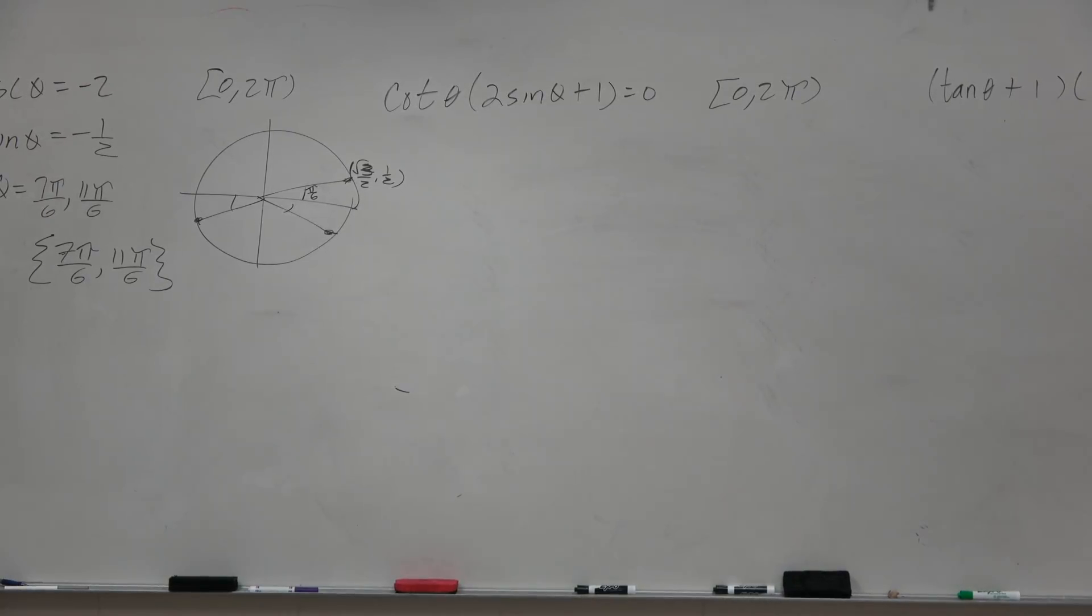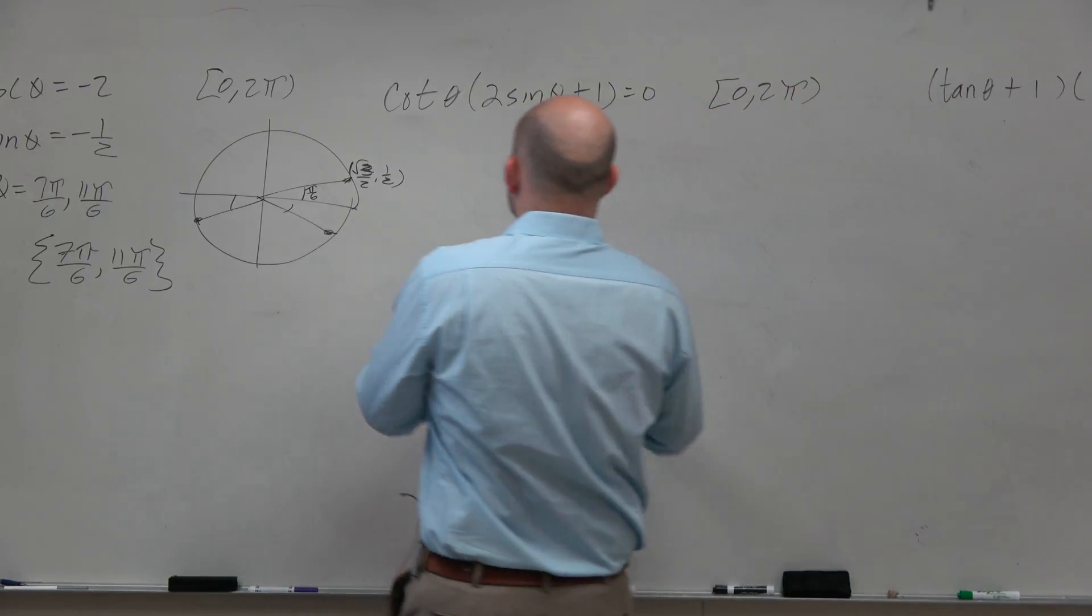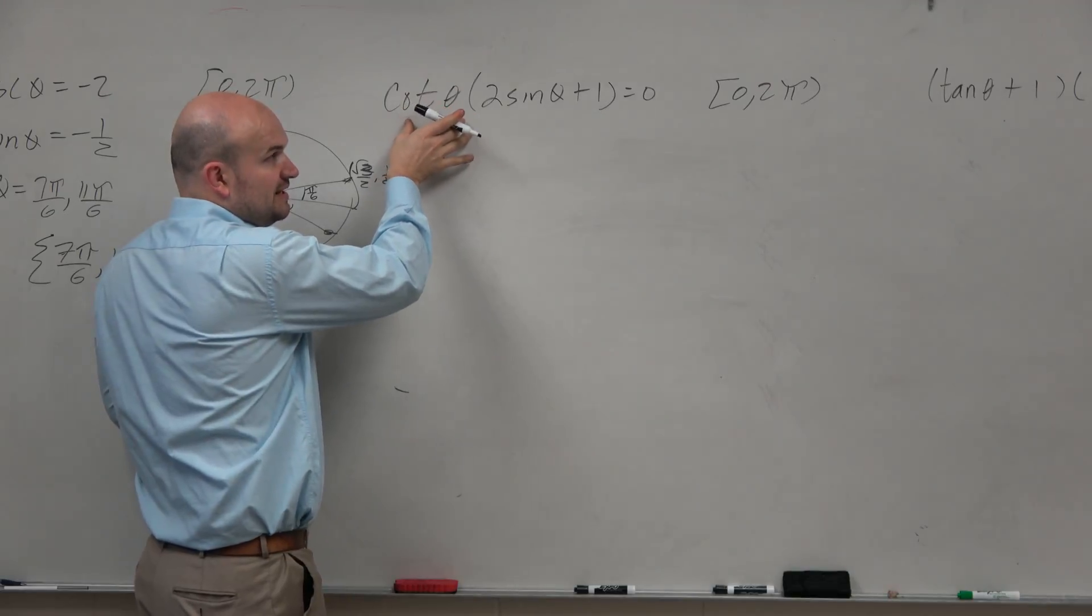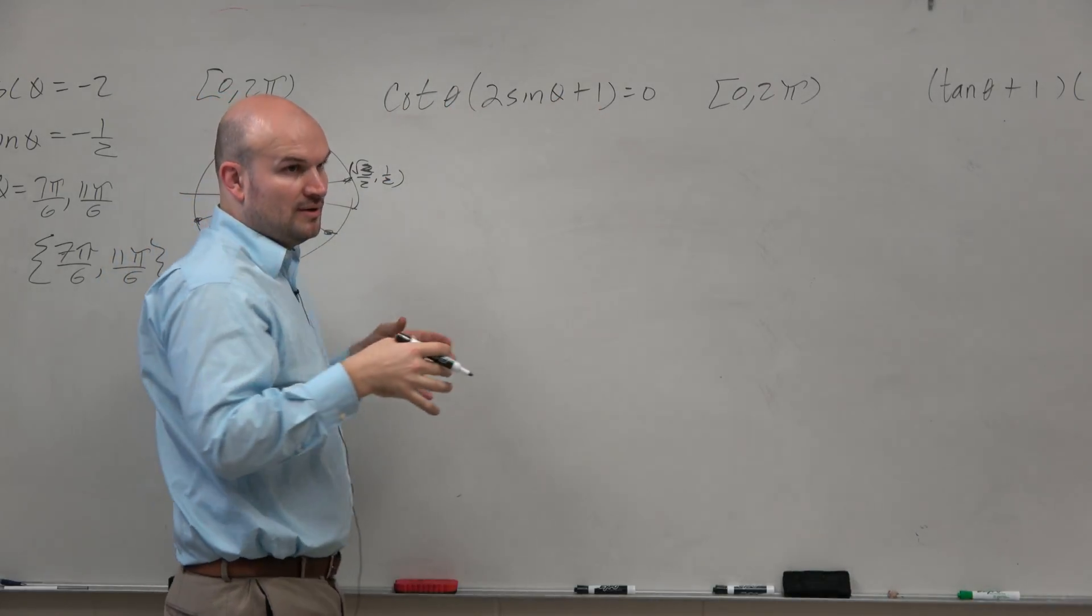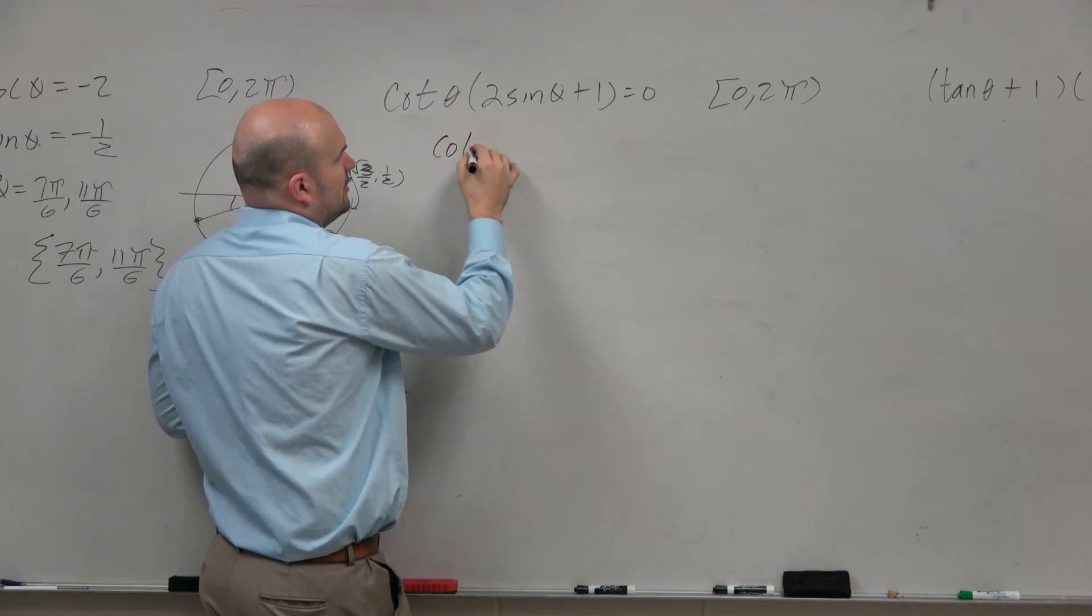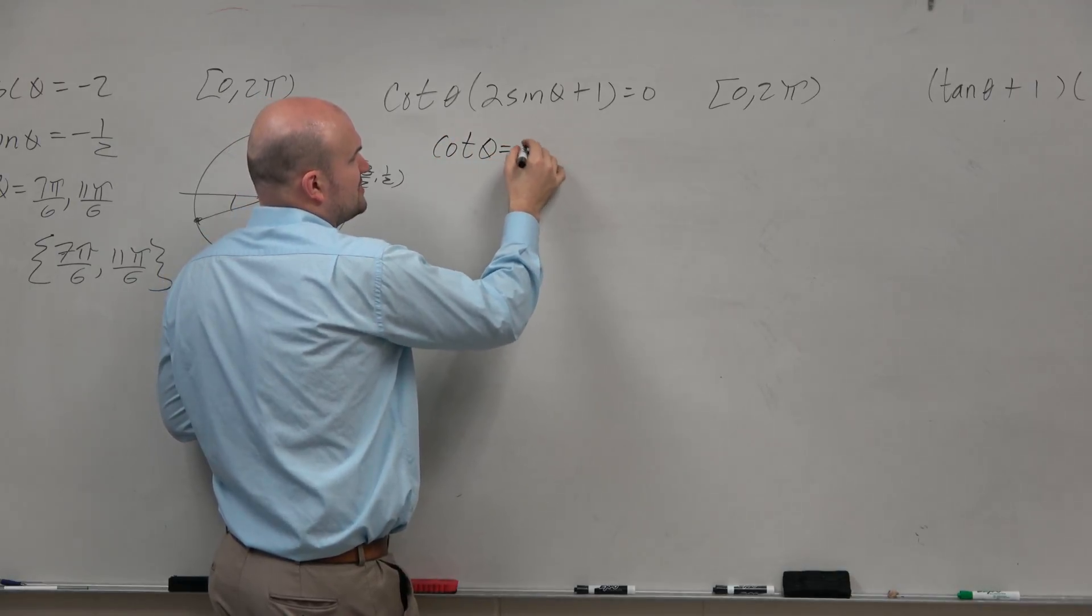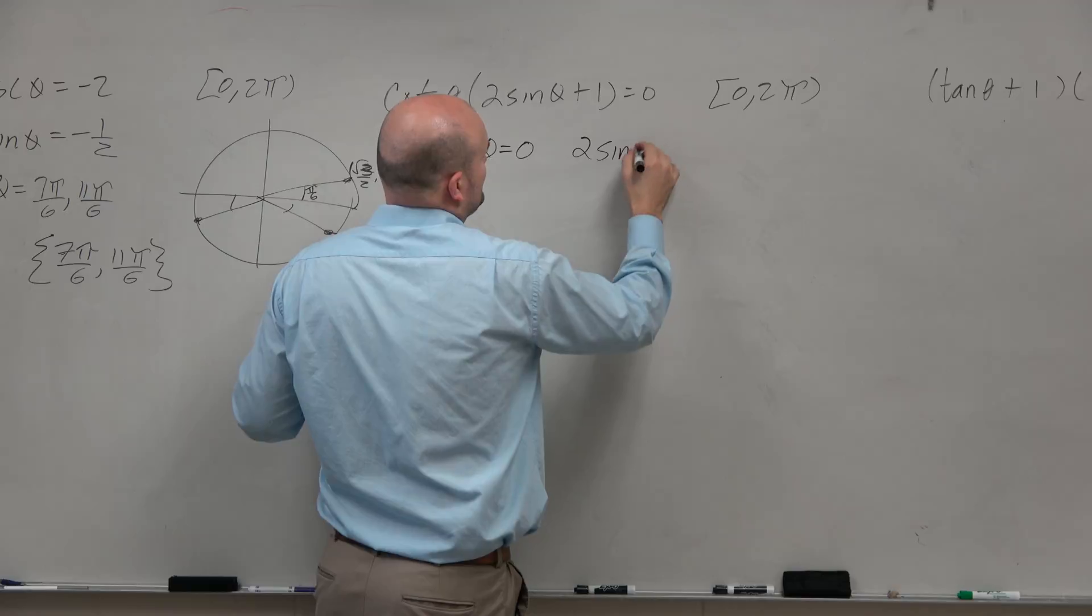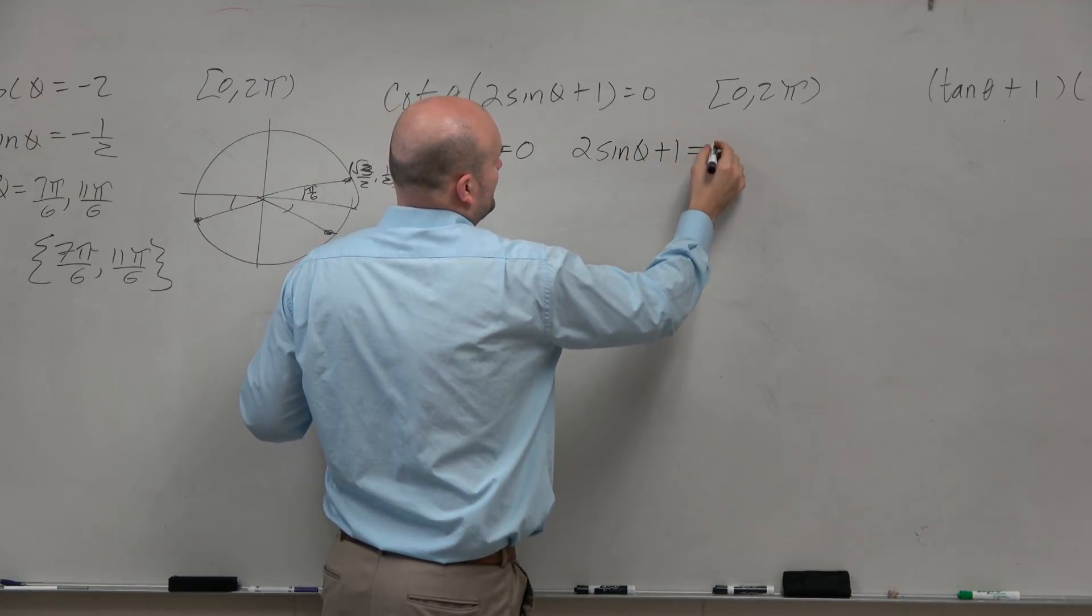In Algebra 1 and Algebra 2, and even in this precalculus, you guys should understand that when I have something multiplied by something else equal to 0, I can apply the zero product property. So I can simply say cotangent of theta equals 0, and then 2 sine of theta plus 1 equals 0.